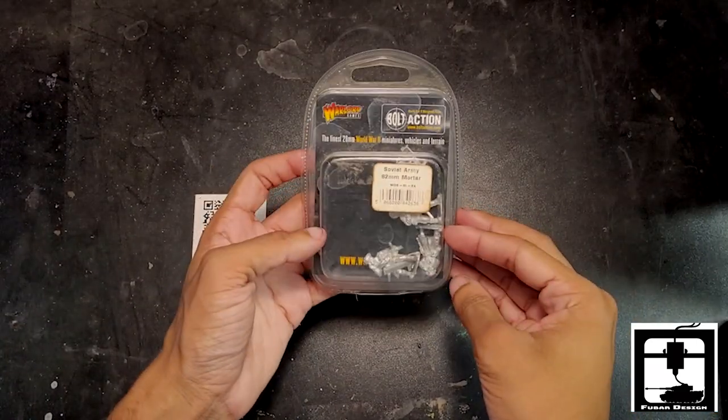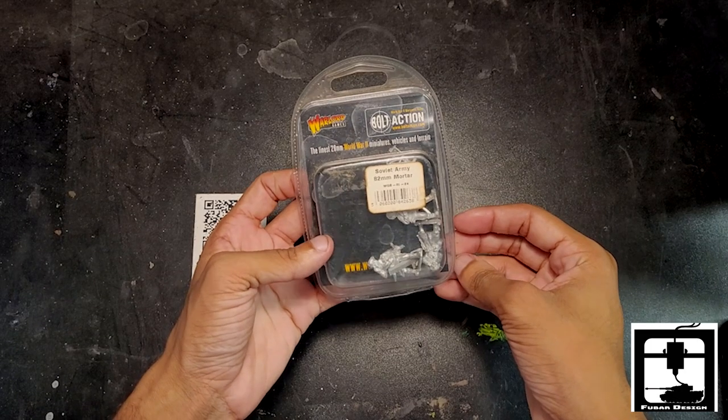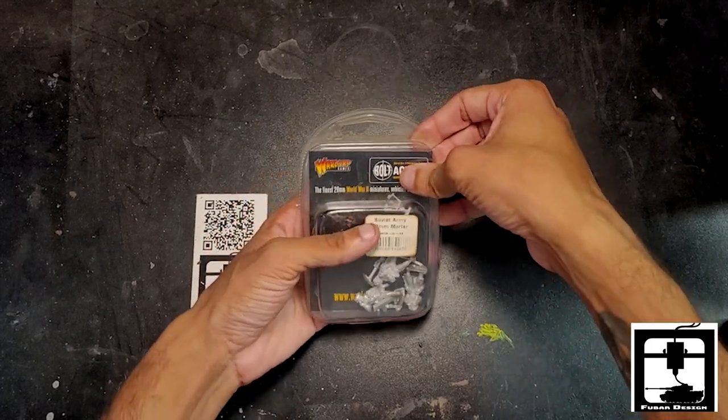Hello, this is Jonathan from Fubar Design Store. Today we're going to be unboxing the Soviet Army 82 millimeter mortar.